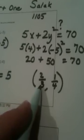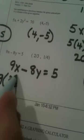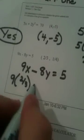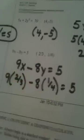We're going to plug 2/3 in for x and 1/4 in for y. So we have 9 times 2/3 in parentheses, minus 8 times 1/4, is supposed to equal 5.